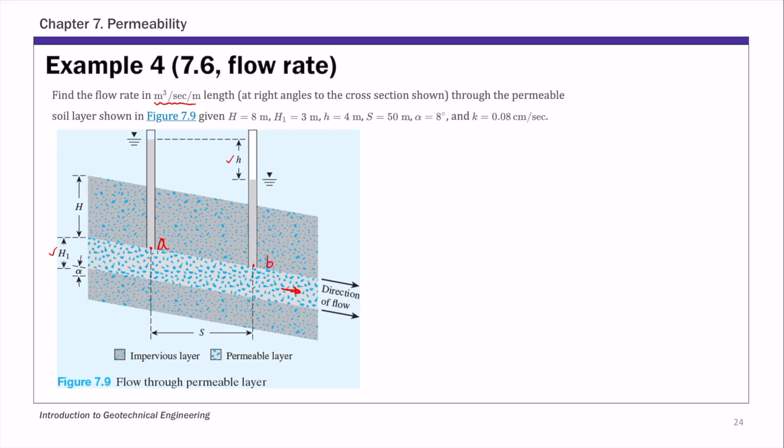So first of all, you have a permeable layer and you have an impervious layer. So this is impervious layer. So first of all, this is called the artesian condition.